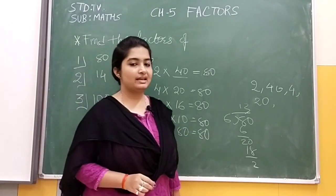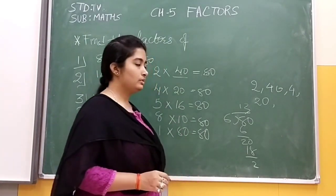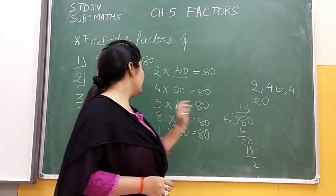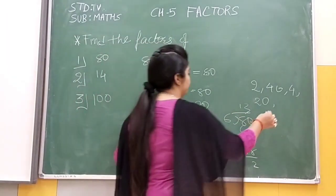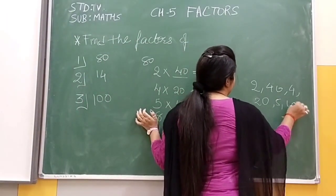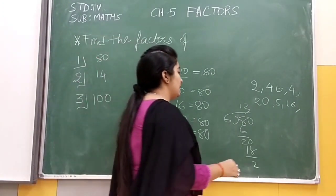So what did we get? 2, 4, 5, 16, then 8, 10, 1 and 80.